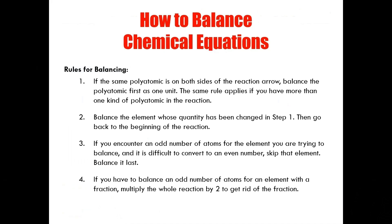And rule number four: if you have to balance an odd number of atoms for an element with a fraction, multiply the whole reaction by two to get rid of the fraction. Now, some of these rules may seem a little cryptic until you start doing some practice questions. So let's jump into some questions together to see how these rules can be applied.